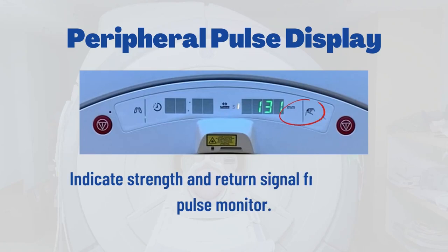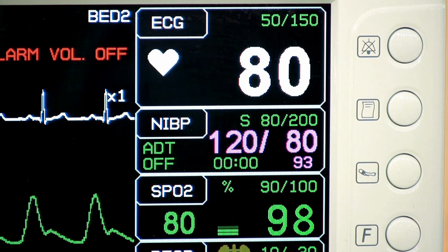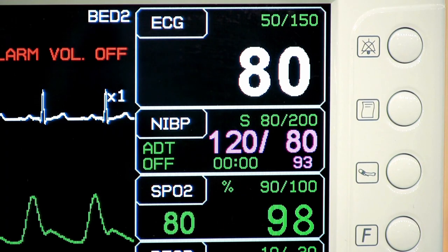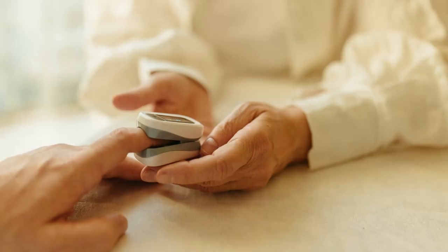Next to the patient location status, we see another bar graph LED similar to the respiratory bellows status display. This LED displays strength and return signal for the peripheral pulse monitor. The pulse sensor is placed around the patient's finger to monitor heart rate during the MRI scan.